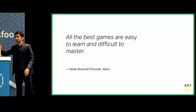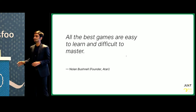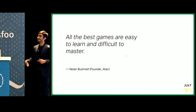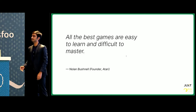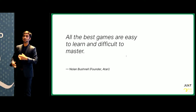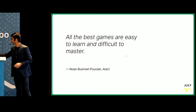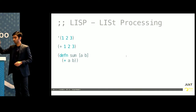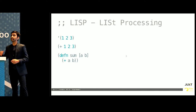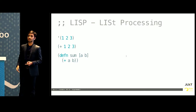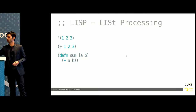Nolan Bushnell said that most good games should be easy to learn but hard to master. We'll see in the next few slides how easy it is to learn ClojureScript, but you'll have to spend some time to master it. Clojure is a Lisp, which means that instead of writing imperative code like you do with JavaScript or other C-style languages, you write your code in the form of trees.